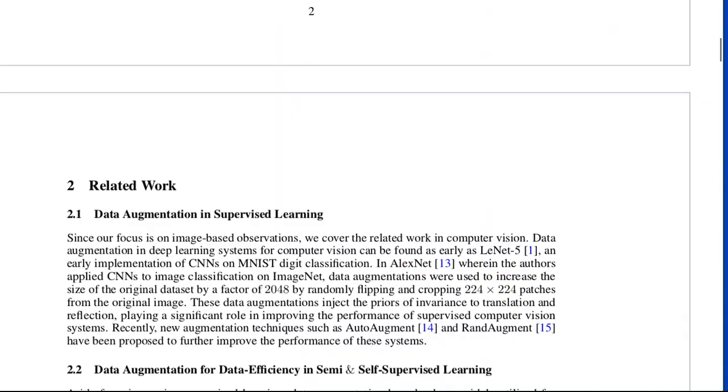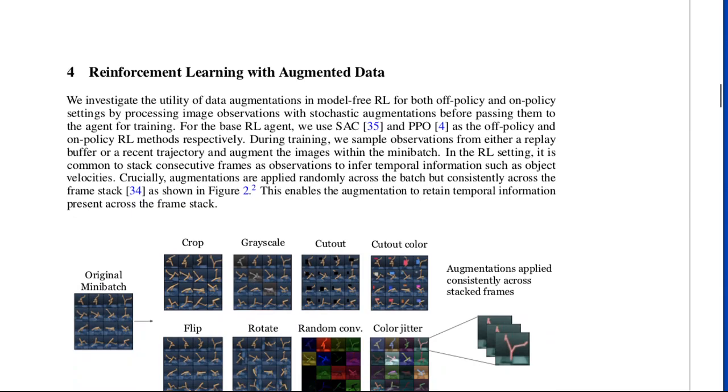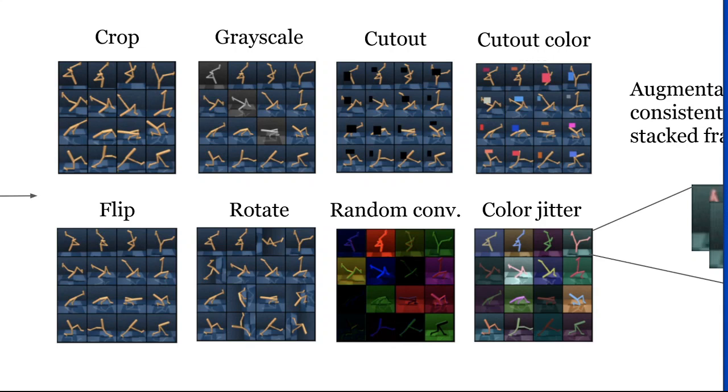This paper proposes just what I said, just plug in the data augmentation and then do reinforcement learning on the augmented data. They use these data augmentations. So crop, we've already discussed, it's a random crop. Grayscale means that the picture goes to gray, black and white with a certain probability.